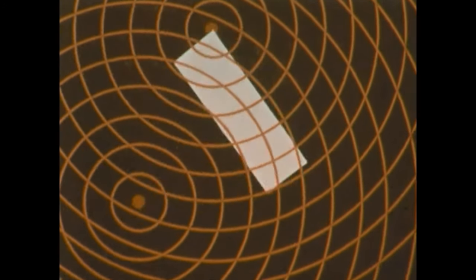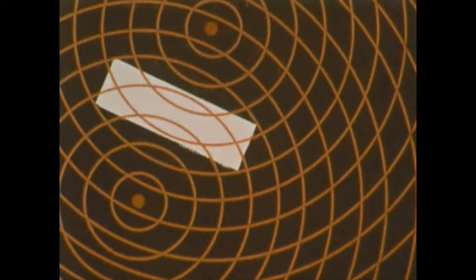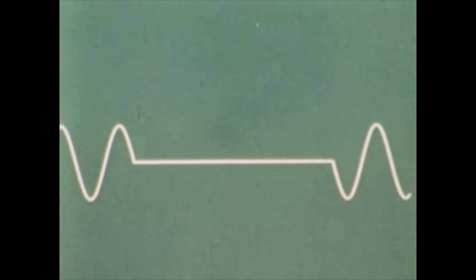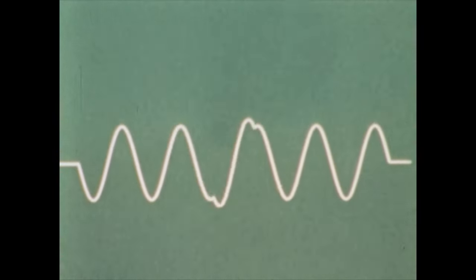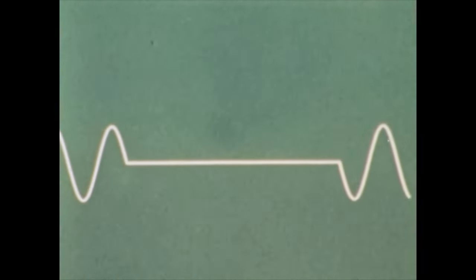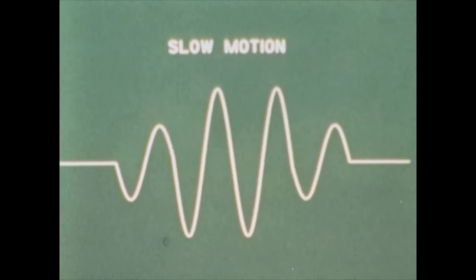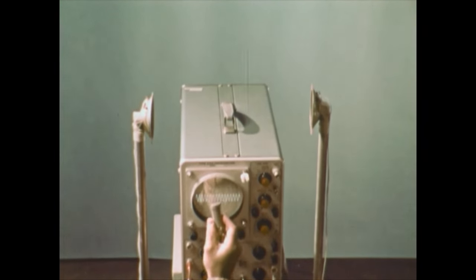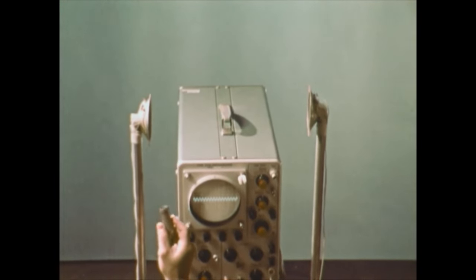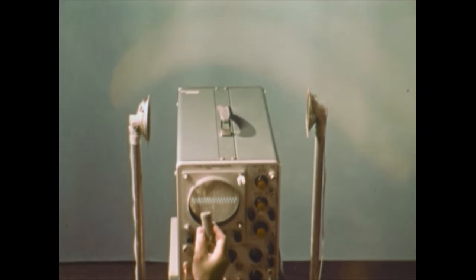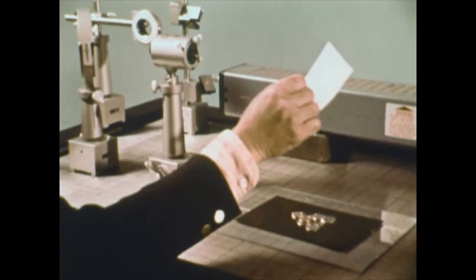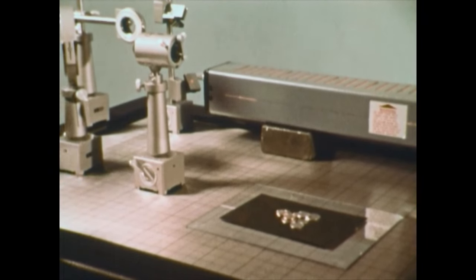What would happen if the emulsion had been between the source and the object? In this case, the interference produces what is known as a standing wave pattern. These are standing waves. Therefore, if the light shines through the film and reflects back from the coins, there will be standing waves of light set up in the emulsion. Laser light will shine through the film and reflect back from the coins.